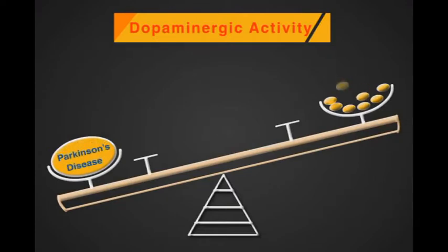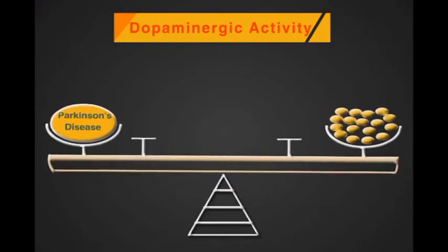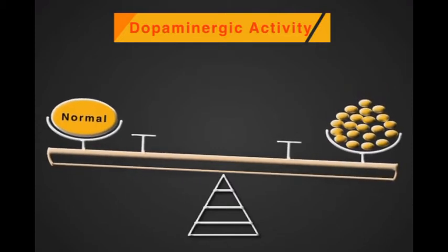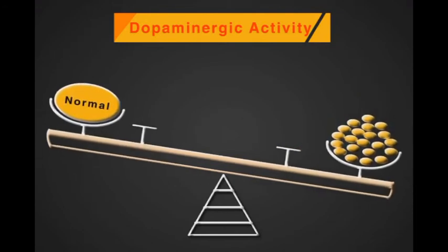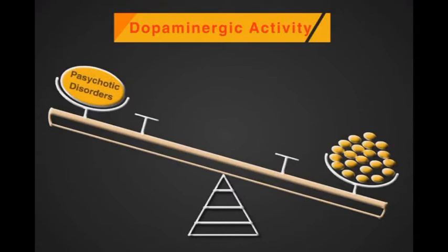In this case, we try to increase the dopaminergic activity in order to keep the patient at a near-normal state. On the other hand, increasing the dopaminergic activity by either external factors such as anti-Parkinson medications or any internal factor might lead to different psychotic disorders such as schizophrenia.